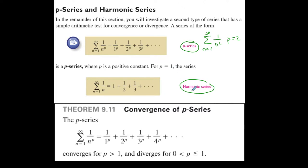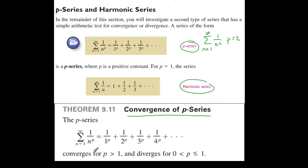Specifically when p is equal to 1, this is a harmonic series. If we recognize that a series follows this form and is a p-series, then we can determine the convergence or divergence. If p is greater than 1, then the series converges. If p is between 0 and 1, then the series diverges.